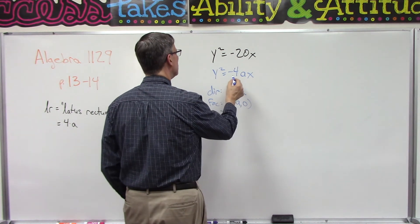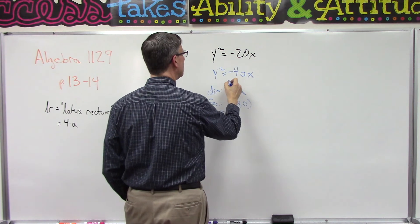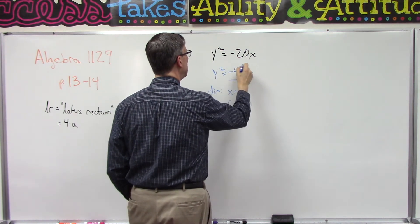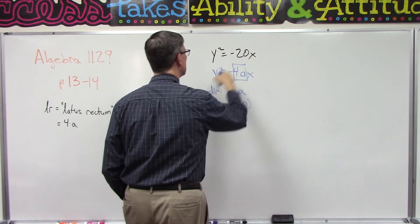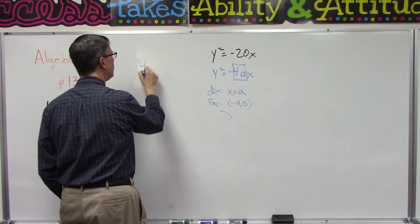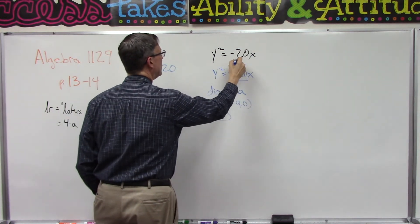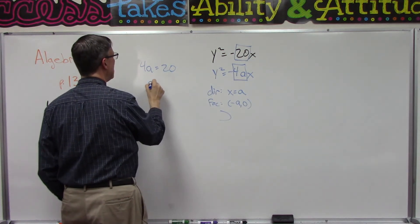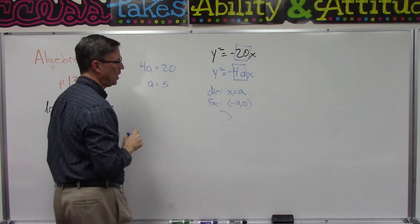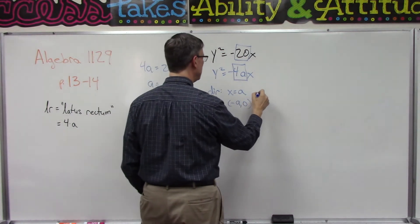Let's first of all figure out what a is going to be. I'm going to put a little box here around -4a. So I need to come over here and say -4a must be equal to -20, so that means a is going to be 5.